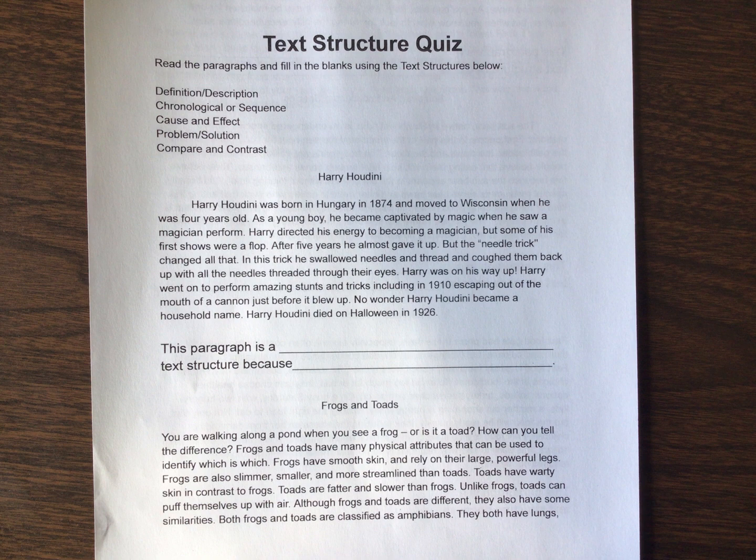Harry Houdini was born in Hungary in 1874 and moved to Wisconsin when he was four years old. As a young boy, he became captivated by magic when he saw a magician perform. Harry directed his energy to becoming a magician, but some of his first shows were a flop.